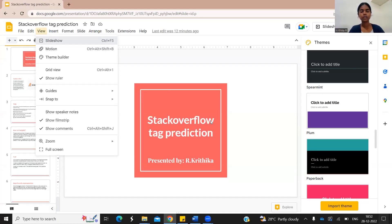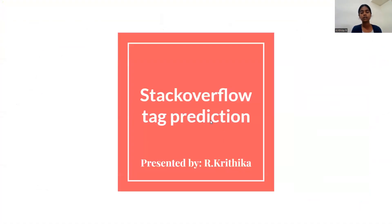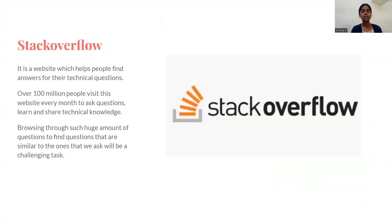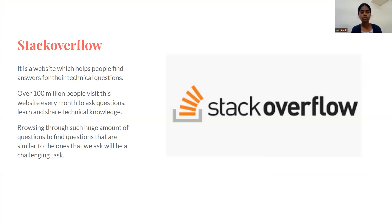So this is our topic, which is to predict tags for questions in Stack Overflow. I'll be going from the basic. Firstly, what is Stack Overflow? It is a website used by a lot of people to find answers for their technical questions. This website finds around 100 million people who visit every month to ask their questions, learn, answer, and share technical knowledge. Browsing through such a huge amount of data will be quite a challenging task when it comes to finding questions that are similar to the ones that the user asks.